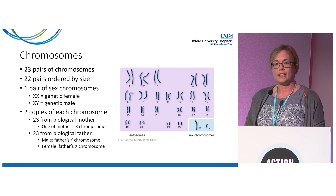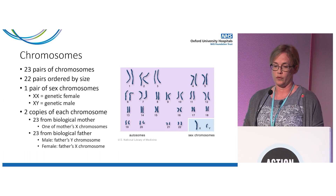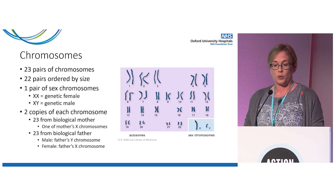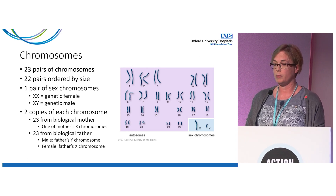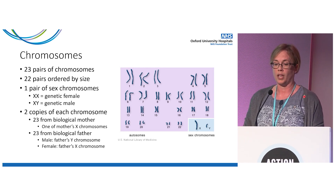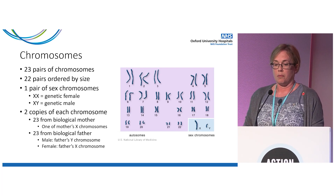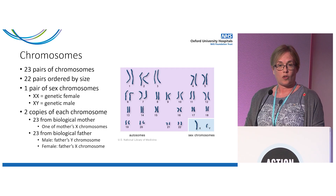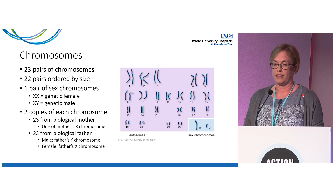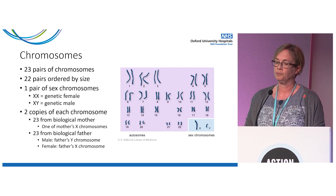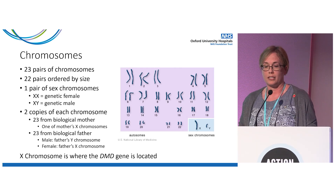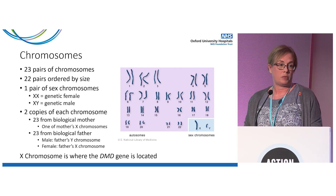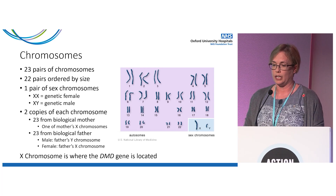A genetic female has two X chromosomes and a genetic male has one X and one Y. You get one set of chromosomes from each of your parents — 23 from your mother, including one of your mother's two X chromosomes, and 23 from your father. Females inherit their father's X chromosome and males inherit their father's Y chromosome. This is important in the context of Duchenne because it's the X chromosome where the gene for Duchenne is located.